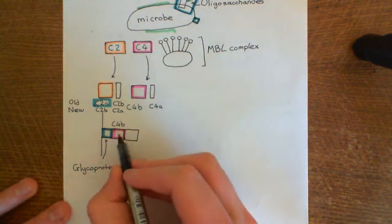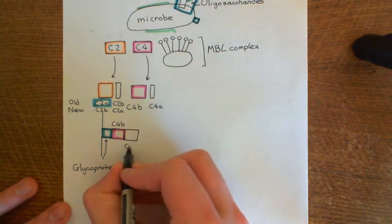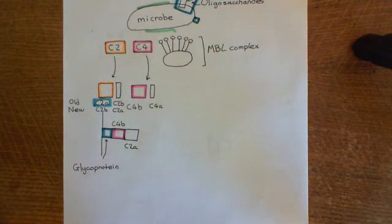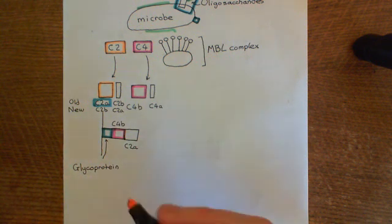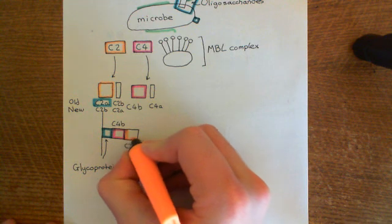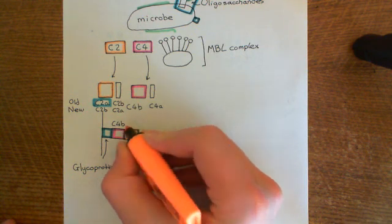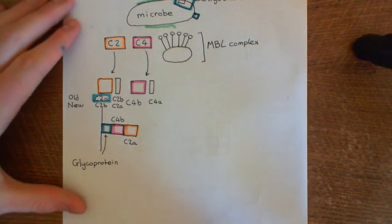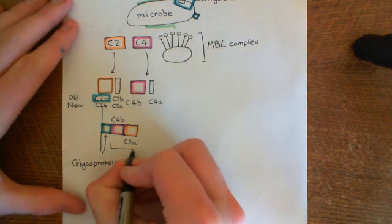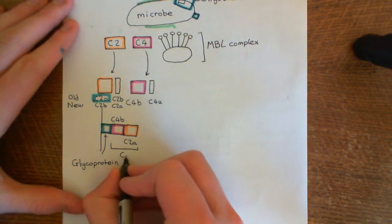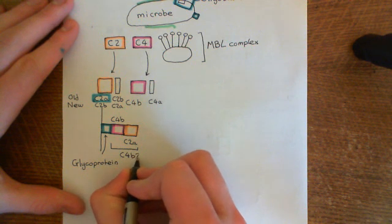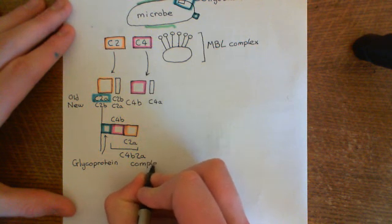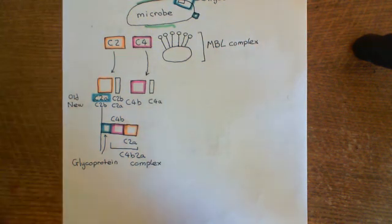So C4B is going to have C2A — this big fragment of C2 — stick on top of it. C4B has stuck to the glycoprotein on the surface of the microbe, and now the big fragment from C2, which we're calling C2A, is going to come and associate on top of C4B. This complex where you've got C4B stuck to C2A is known as the C4B2A complex.